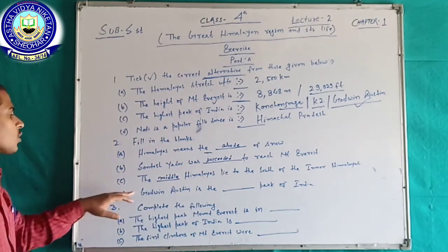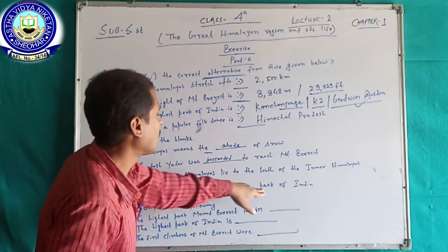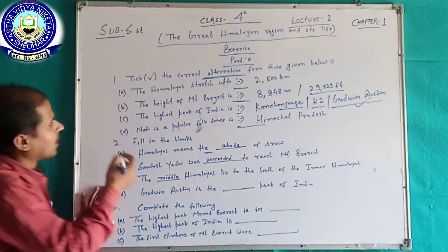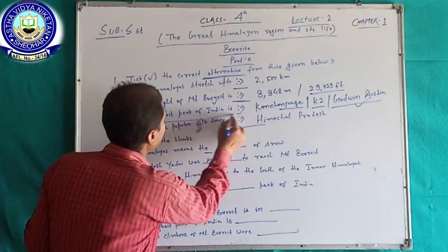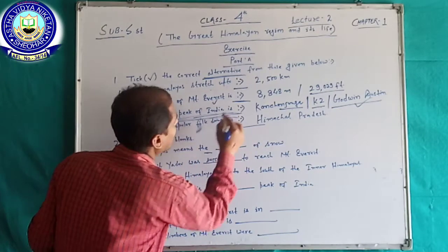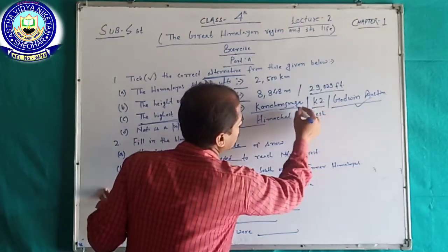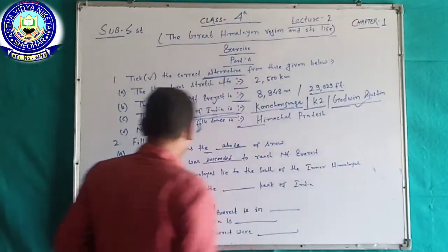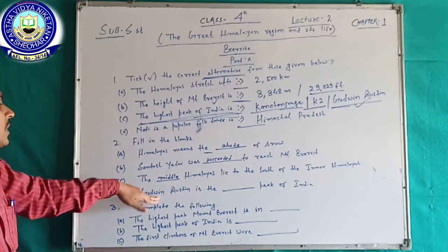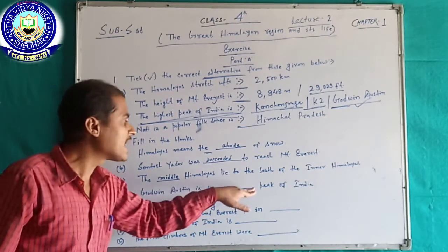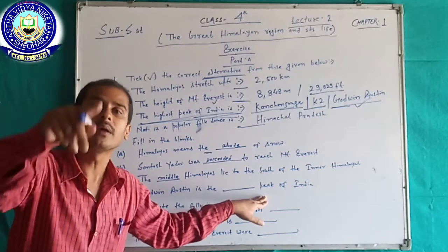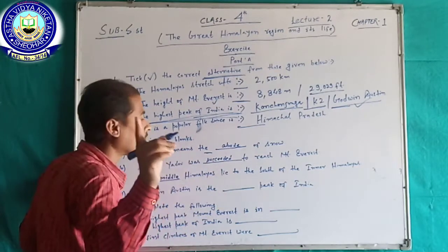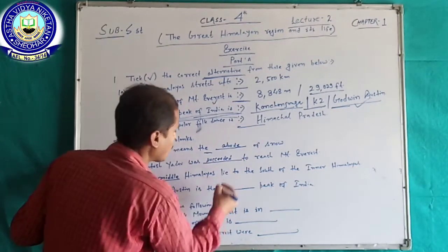Your fourth question: Godwin Austin is the highest peak of India. Dear students, in your first question the highest peak of India is Kanchenjunga, also known as K2 and also known as Godwin Austin. So this question refers to the highest Himalayan mountain peak in India — we write here: highest mountain peak of the Himalayas in India.